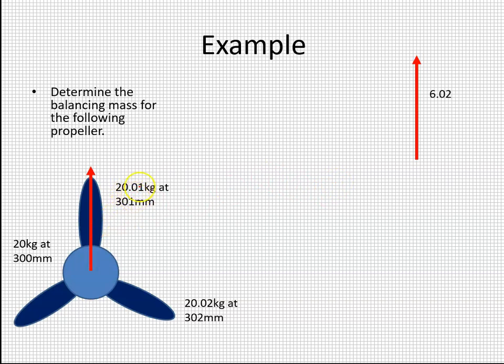So the mass times radius for this is 6.02 at an angle of 90 degrees. 20 kilograms by 300 millimeters is 6 at that angle, and then 20.02 by 302 is 6.04.